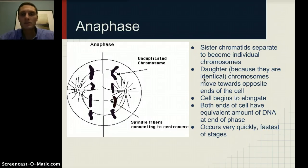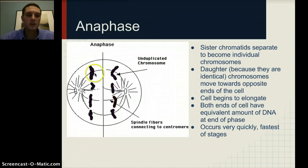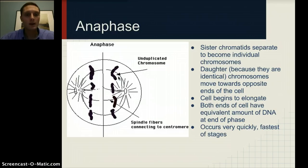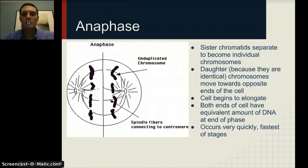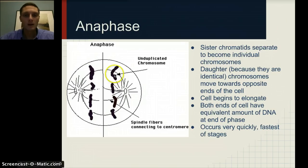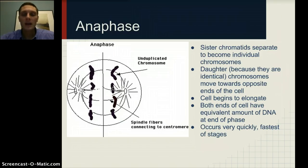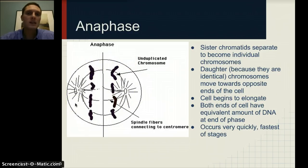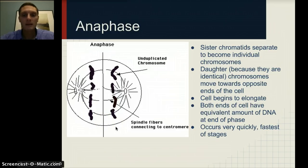In anaphase, sister chromatids separate to become individual chromosomes — they're actually separating and pulling away from each other. The microtubules provide the force allowing those chromosomes to be separated. We refer to them as daughter chromosomes because they are identical, and they move toward opposite ends of the pole. The cells begin to elongate and pinch apart, and both sides of the cell will have the equivalent DNA. Anaphase is a very quick phase — one of the fastest of all the stages.